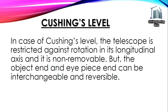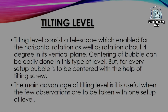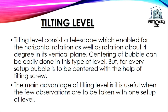In Cushing's level, the telescope is restricted against rotation in its longitudinal axis and is non-removable, but the object end and eyepiece end can be interchanged and reversed. The tilting level consists of a telescope that can rotate horizontally as well as tilt about four degrees in its vertical plane. Centering the bubble is easy in this type, but for every setup the bubble must be centered using the tilting screw. Its main advantage is usefulness when only a few observations are to be taken with one setup.